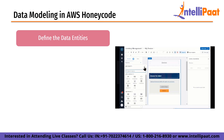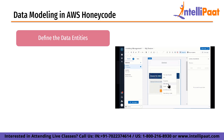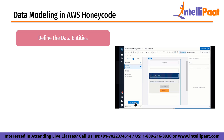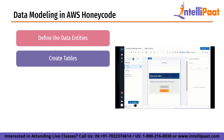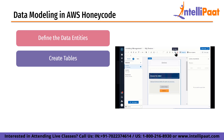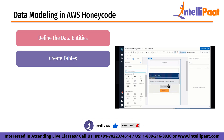First, define the data entities. The first step in data modeling is to define the data entities that the app will use — the objects the app will work with, such as customers, products, or employees. Each entity should have a unique name and be described in terms of its attributes. Next, create tables. After defining the data entities, the next step is to create tables that represent each entity. Each table should have a unique name corresponding to an entity in the data model, and tables are used to store data records for each entity.